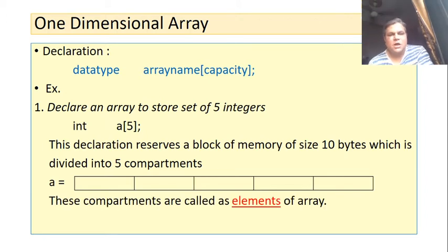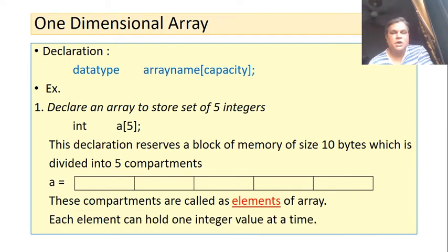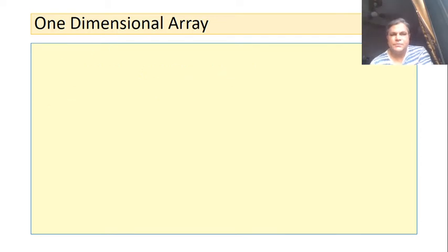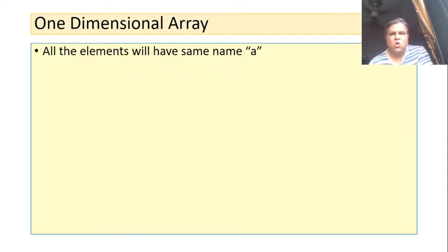These compartments are called elements of the array. Each element can hold one integer value at a time, so array A can store five integer values at a time. This is the advantage — in a single variable A, we can hold multiple values. All five elements have the same name A.